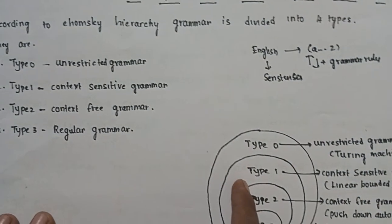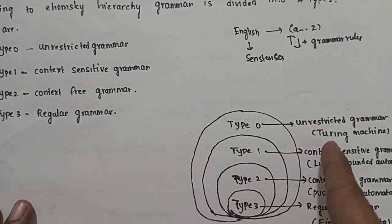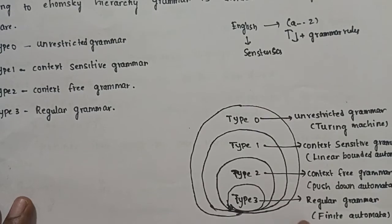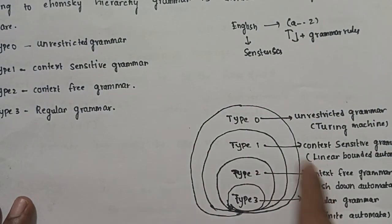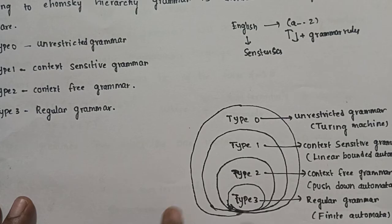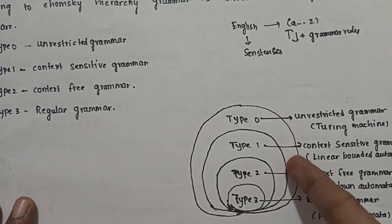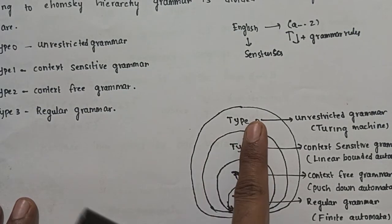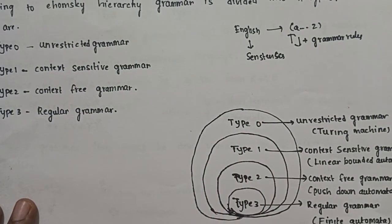A particular machine accepts the language — either a Turing machine, linear bounded automata, pushdown automata, or finite state automata. This machine accepts the language, which is formed by grammar rules. If you use some input alphabets and grammar rules to form a language, the machines accept that language.